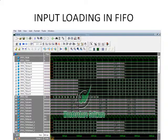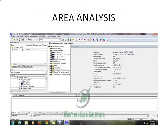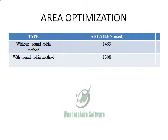The figure represents the input loading in FIFO, that is, the buffer writing, where some values are designated to the ports. During the area analysis, we used the round-robin method, with which the number of total logical elements used is 1308. During area optimization, without the round-robin method the number of logical elements used was 1469, but after applying the round-robin method it is reduced to 1308. Therefore, the area is reduced by a notable amount.